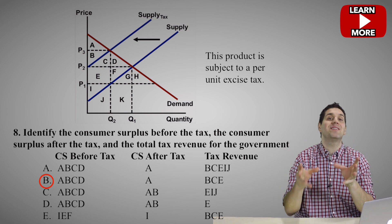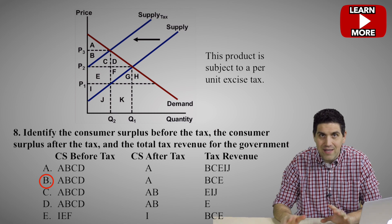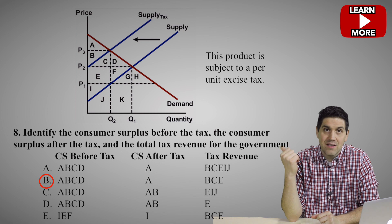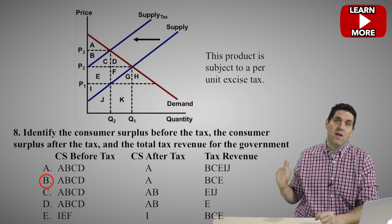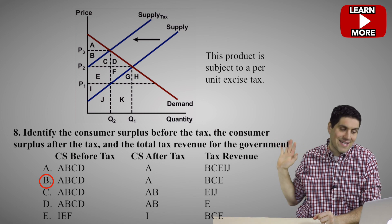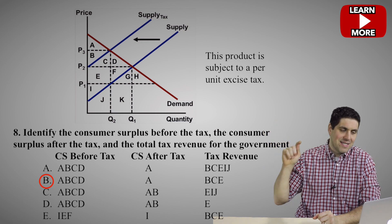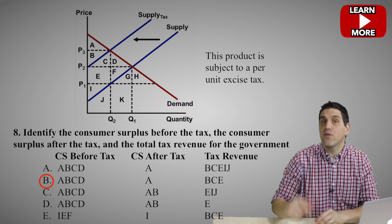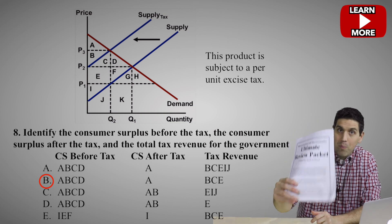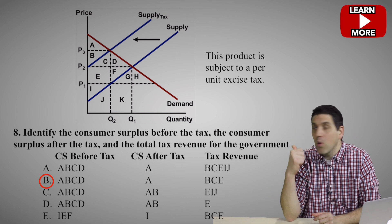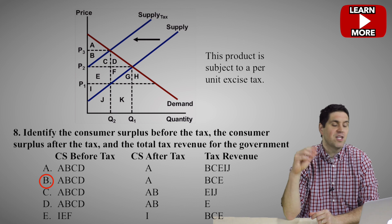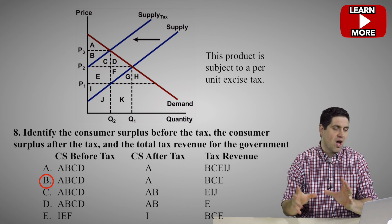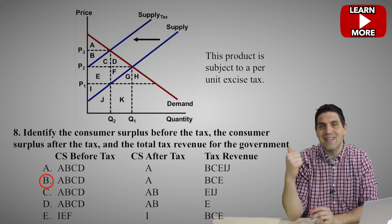A quick bonus round: where is the deadweight loss? Assuming there are no externalities, the deadweight loss due to the tax is areas D and F. When the government taxes this, D and F go to no one — not consumers, not producers. If you've watched the summary videos and filled out the ultimate review packet, you should be able to spot total spending by consumers, total revenue received by producers, and all these concepts within the graph.